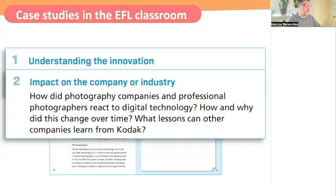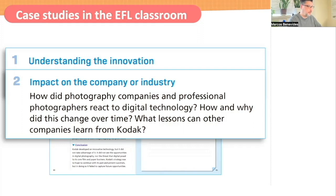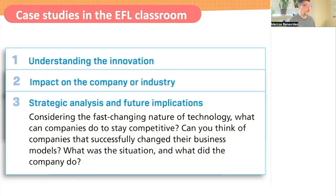It then expands into the impact on the company or industry. So in this case, it says: how did photography companies and professional photographers react to digital technology? How and why did this change over time? And very importantly, what lessons can other companies learn from Kodak? These are the higher-level meta skills that we are targeting here. And finally, the third area covers future implications — strategic analysis and future implications of the case. Looking at the fast nature of technology, what can companies do to stay competitive? You could tie this in, for example, with how will AI change business models of companies? So you can see that these are all very high-level questions that could be done with some scaffolding and support.